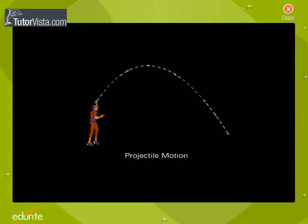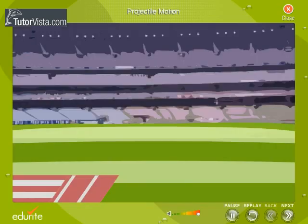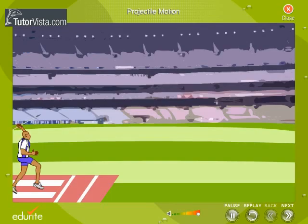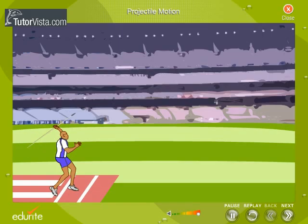Projectile Motion. Observe the athlete throwing a javelin. The javelin follows a curved path and lands on the surface of the Earth.